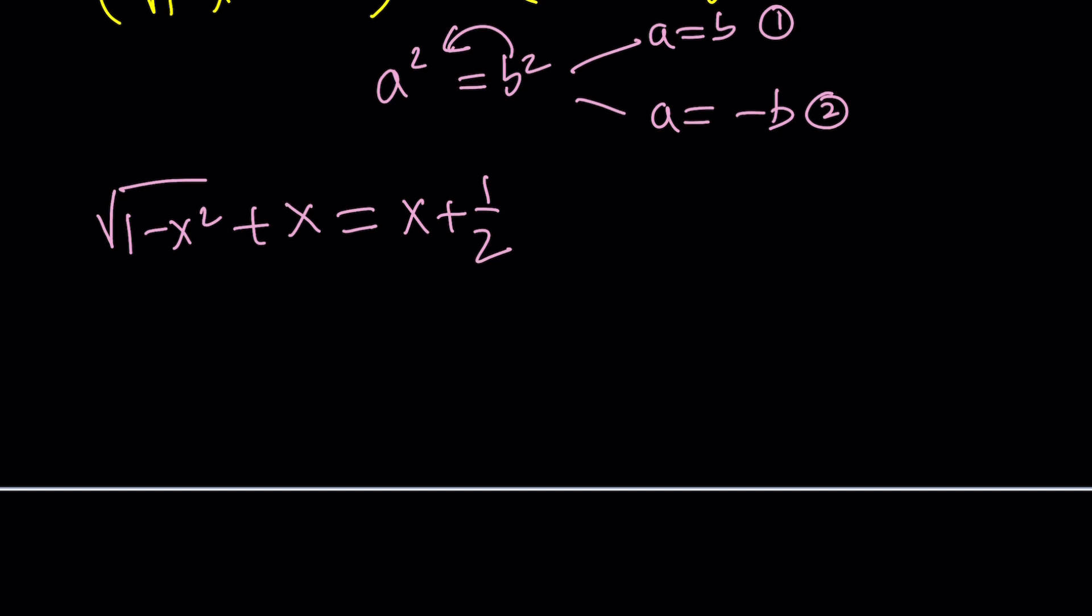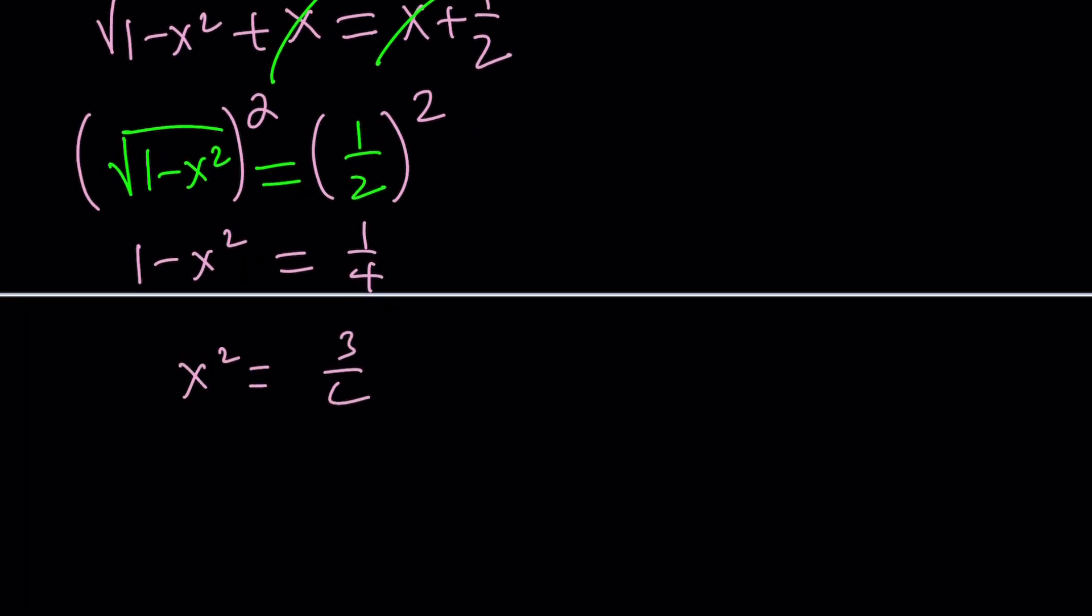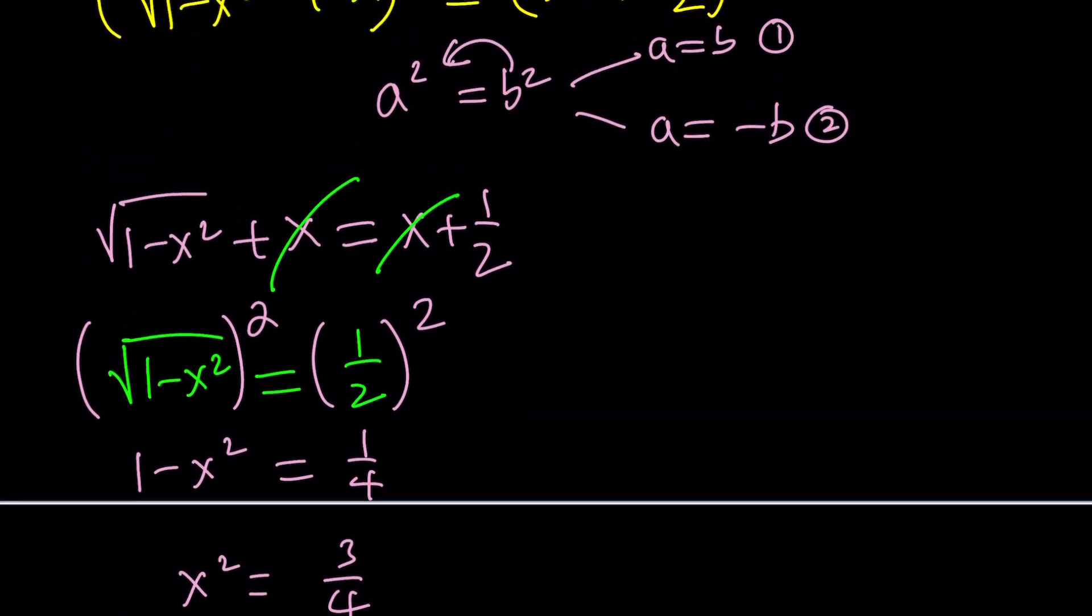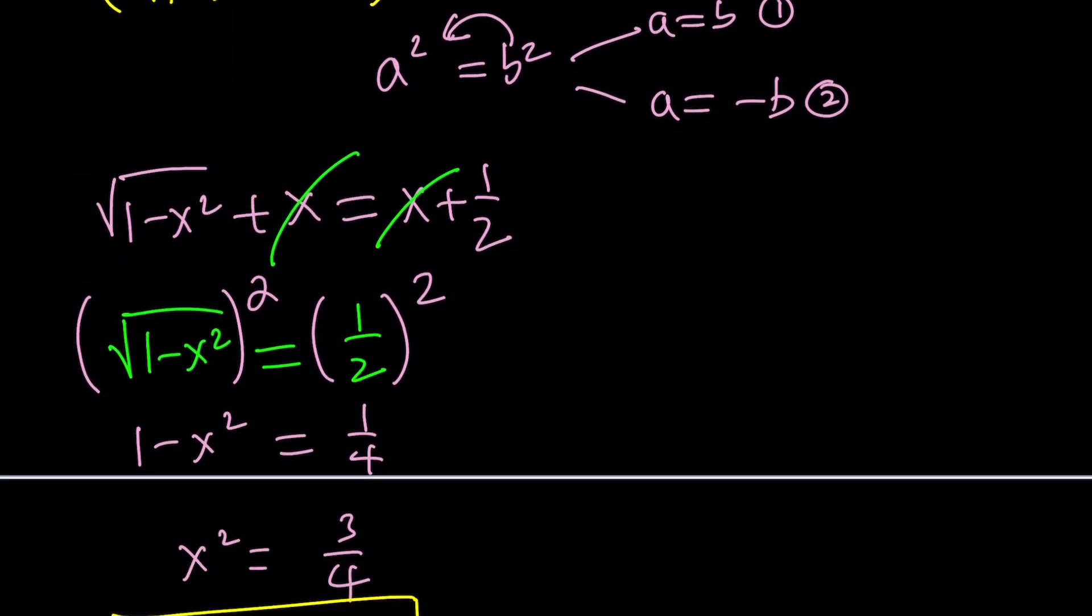Here, notice that x cancels out. Isn't that nice? Super nice. Now we get the following. Square both sides, and you'll get the solutions. 1 minus x squared is equal to 1 fourth, which means x squared is equal to 3 fourths, and x is equal to plus minus root 3 over 2. So those are the x values. Are they both valid? Think about it, because we're about to look at the second case. So this was the first case.